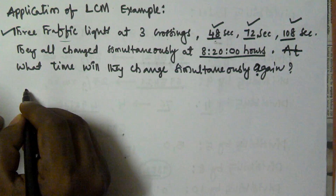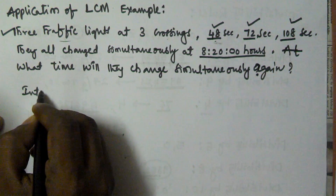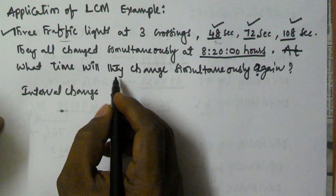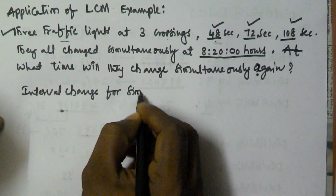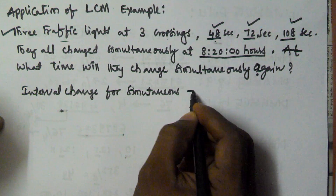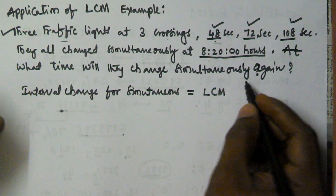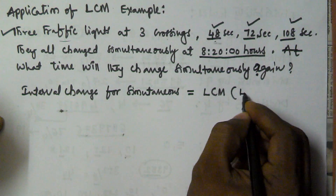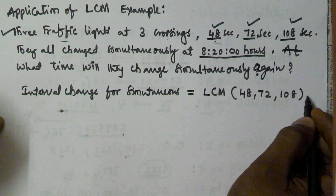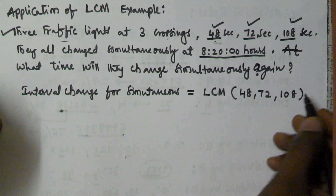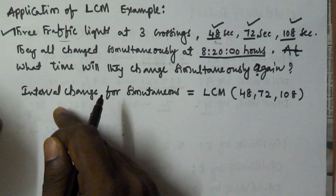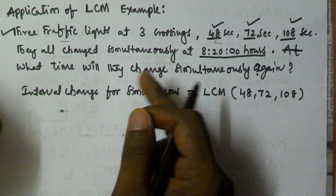The interval change for simultaneous change is given by the LCM of 48, 72, and 108. So the LCM of 48, 72, and 108 gives the simultaneous interval after which they change simultaneously.